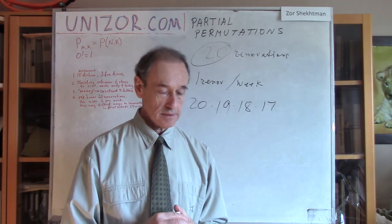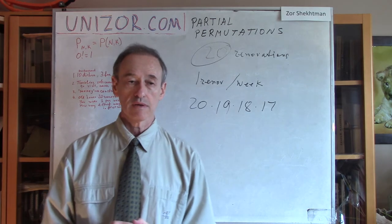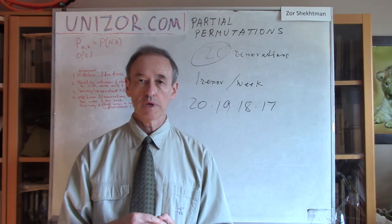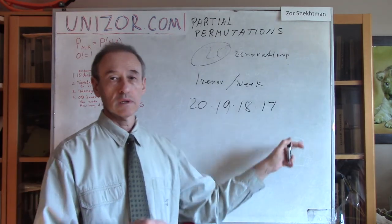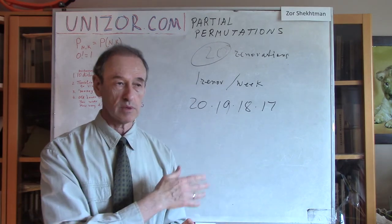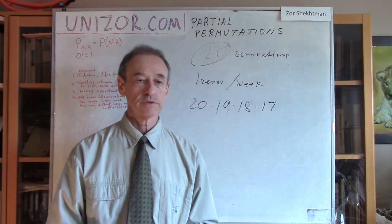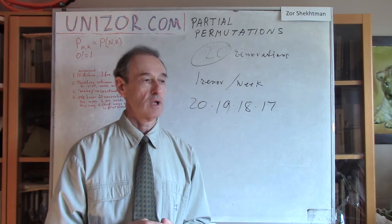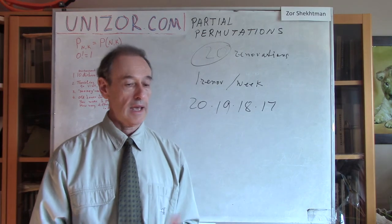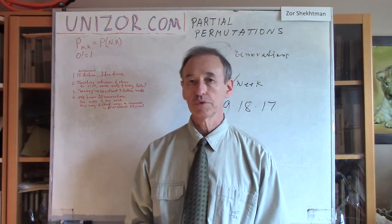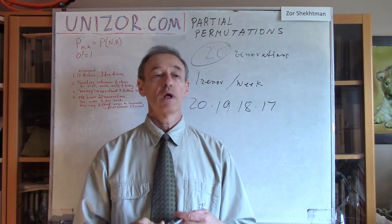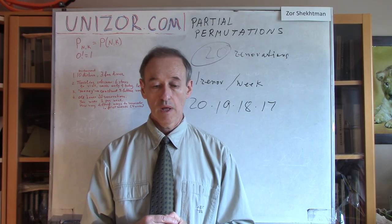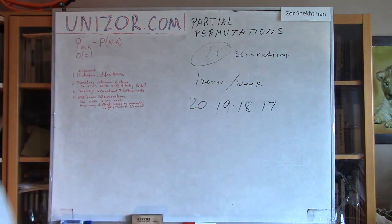That's all I wanted to talk about as far as partial permutations go. Think about the logic behind it: the logic is basically multiplying diminishing numbers from the biggest to whatever is necessary. If you want, you can always derive the formula in factorial fashion, remembering that 0 factorial is equal to 1. I do recommend you to go to unizor.com and go through the notes for this lecture and whatever problems will be presented. Thanks very much, and good luck.